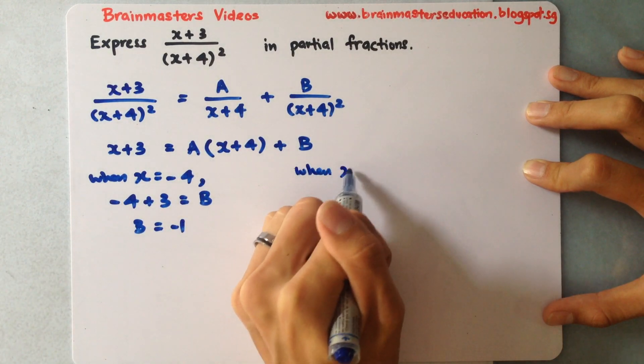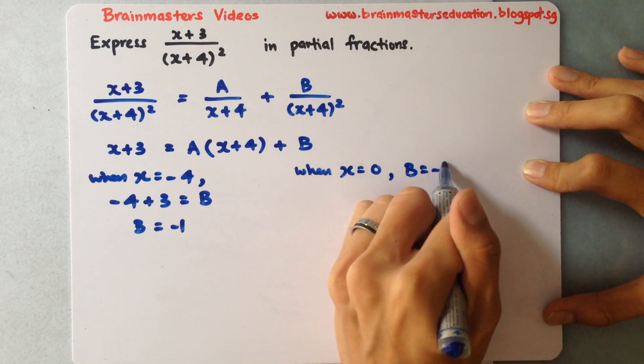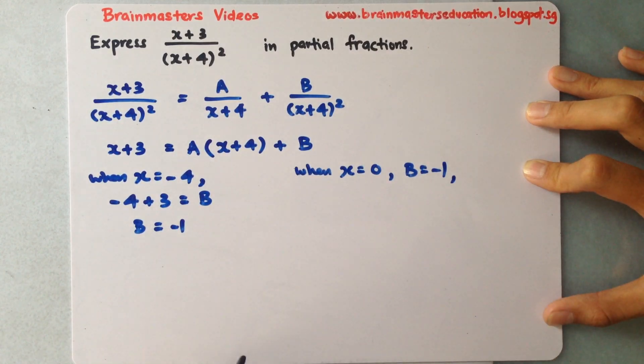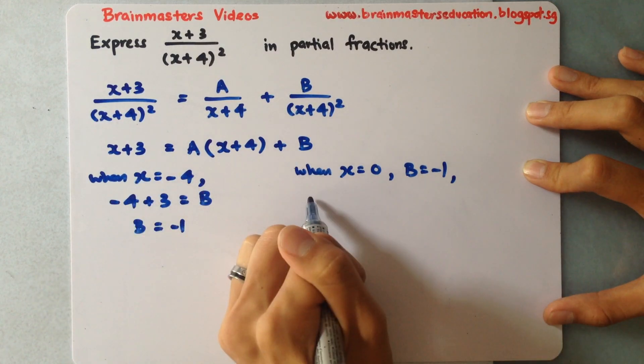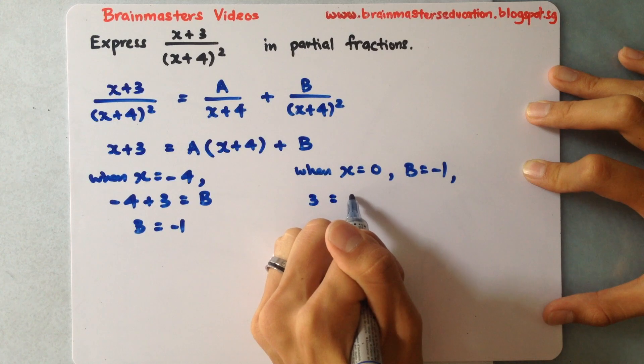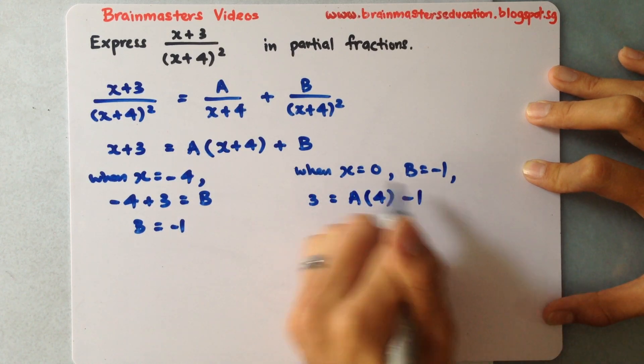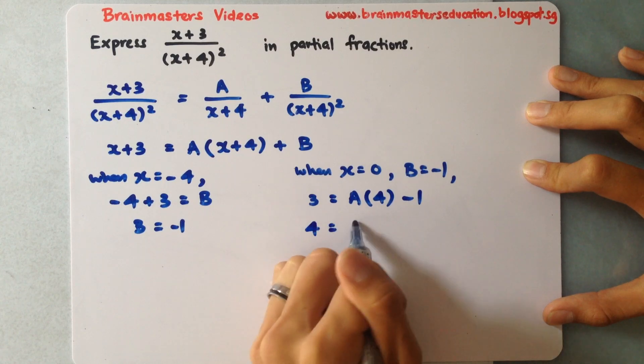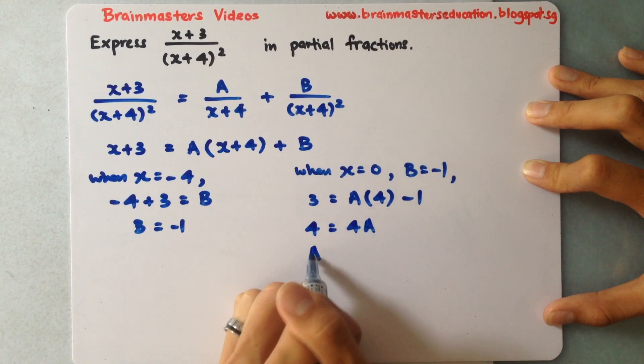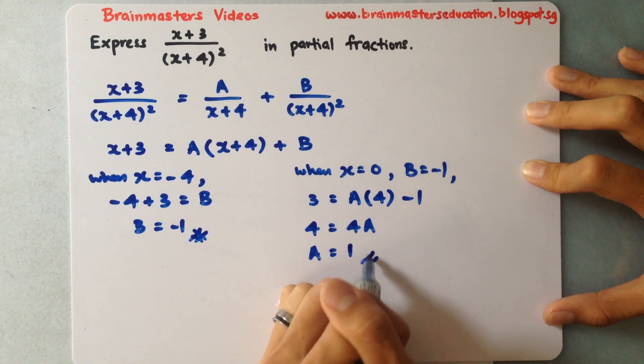Next, when x equals 0 that will be easier in this case, and my B equals negative 1 since I found it. By substituting into this, I'll have 3 on the left-hand side equals A multiplied by 4, B is negative 1. Bring this over: 4 equals 4A, and both sides divide by 4, A equals 1.